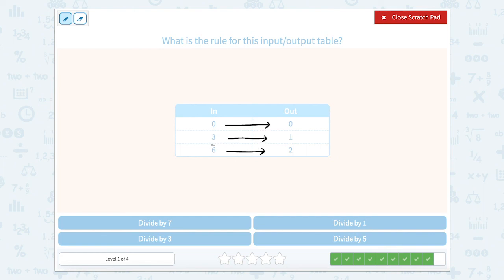So we need to pay more attention to these other two sets of numbers. So to go from 3 to 1 and 6 to 2, what do we need to divide by? Well, 3 divided by something equals 1. Well, 3 divided by 3 equals 1. Let's see if that's right for 6. 6 divided by 3 equals 2.